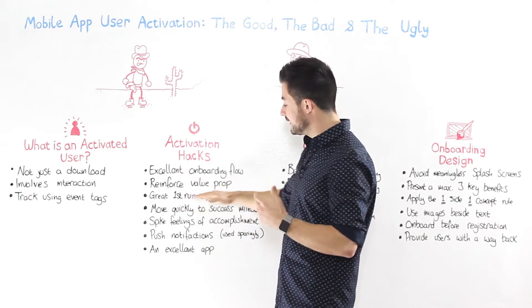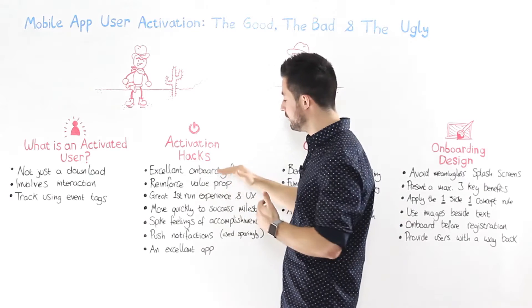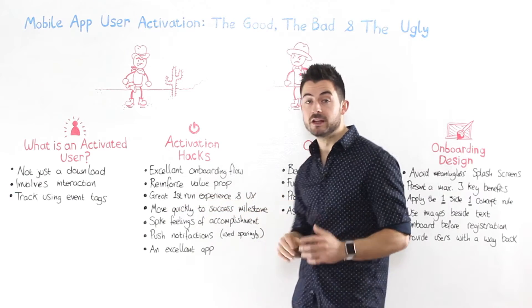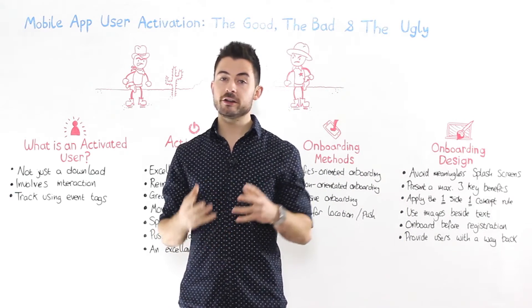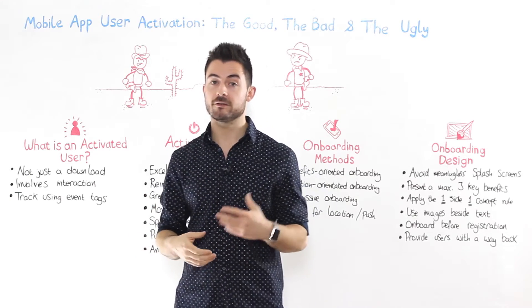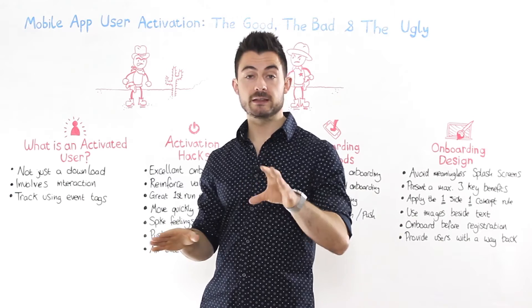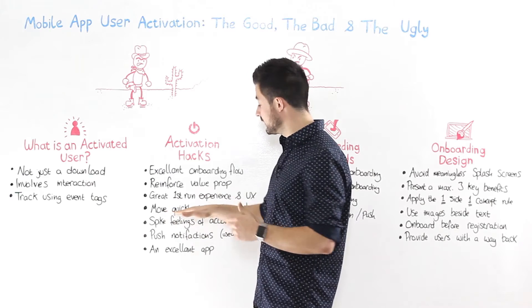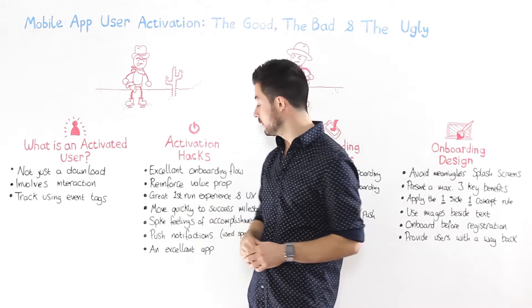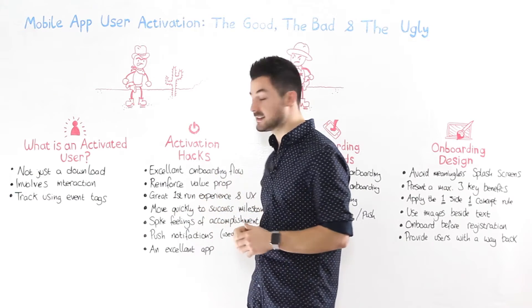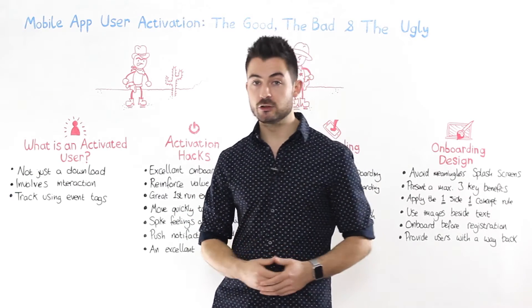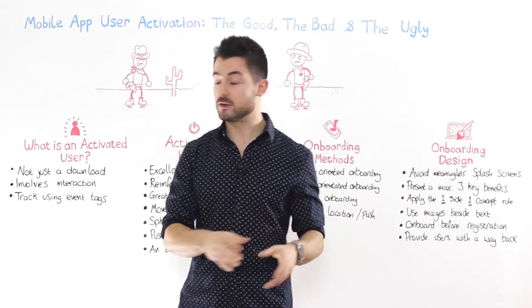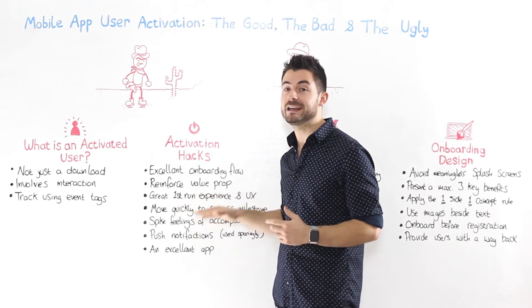Once you've got them into the app, gone through the first run and the onboarding, and reinforced your value proposition, now is a great time to move them as quickly as possible to the first success milestone. The longer it takes for them to complete that first success milestone, the greater the chances of it not happening at all. You really want to reduce the time from first download to first success milestone — present that button, add that to-do, add the item to the wishlist, book that flight. Whatever is that first success milestone in your app, get them there as quickly as possible.